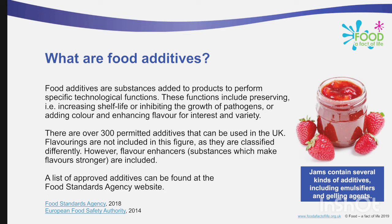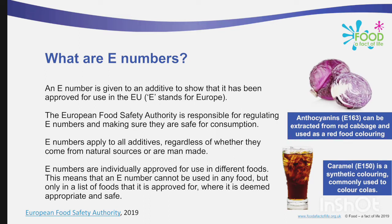Jam contains several kinds of additives including emulsifiers and gelling agents. An E number is given to an additive to show that it has been approved for use in Europe — E stands for Europe. The European Food Safety Authority is responsible for regulating E numbers and making sure that they are safe for consumption. E numbers apply to all additives regardless of whether they come from a natural source or are manmade, and are individually approved for use in different foods. For example, anthocyanin E163 can be extracted from red cabbage and used as a red food coloring, and caramel E150 is a synthetic coloring commonly used to color colas like Coca-Cola.